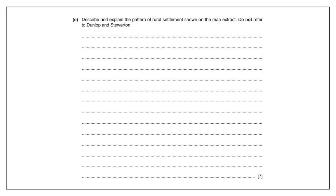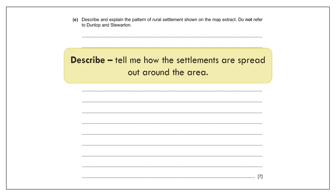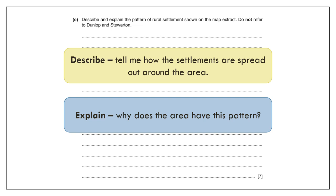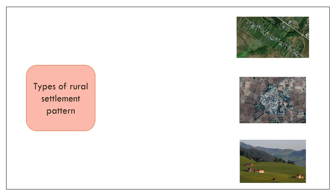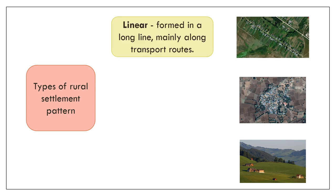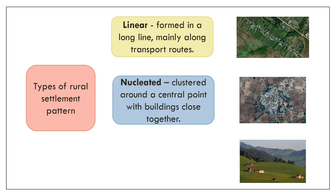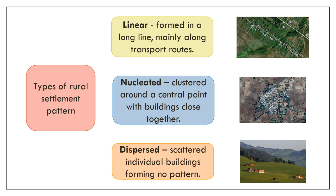This is a seven-mark question — typically it's five marks — asking you to describe and explain the pattern of settlement. The three main types of settlement pattern are: linear, which forms a long line mainly along transport routes; nucleated, where settlements are clustered around a central point such as a crossroads; and dispersed, where buildings are scattered around the area, usually farm buildings and the like.